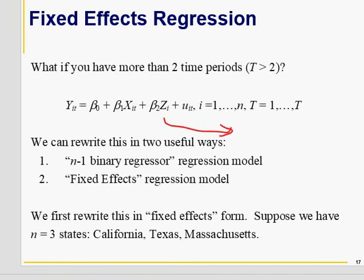If you have data for more than two time periods, then you introduce n minus one dummy variables to capture state-specific effects. N minus one dummy variables are introduced because your intercept is already there, so to avoid the dummy variable trap, you introduce n minus one binary variables.